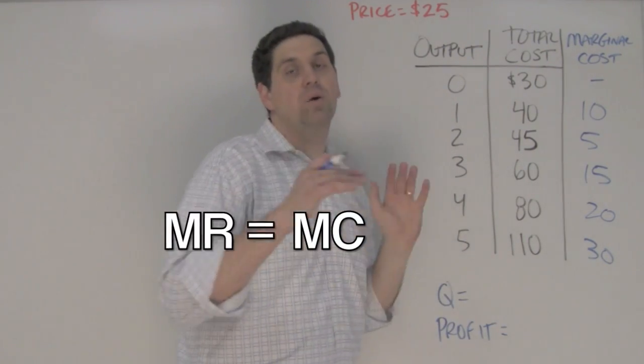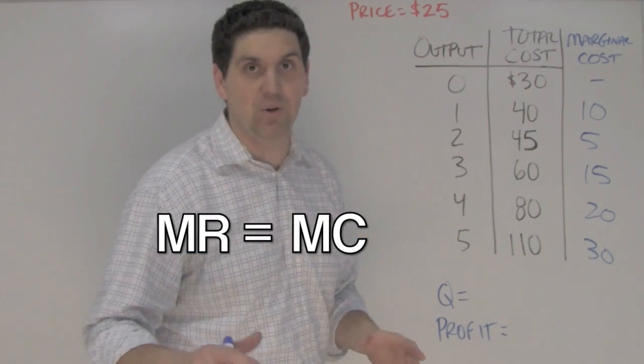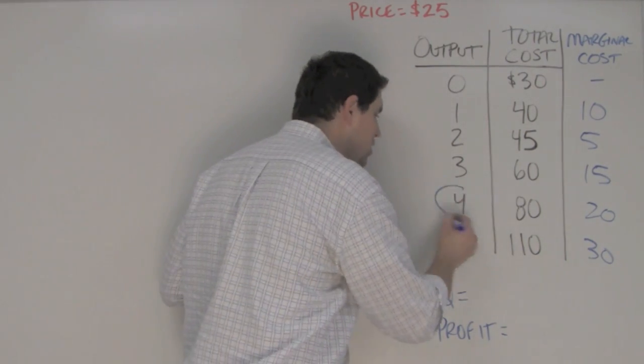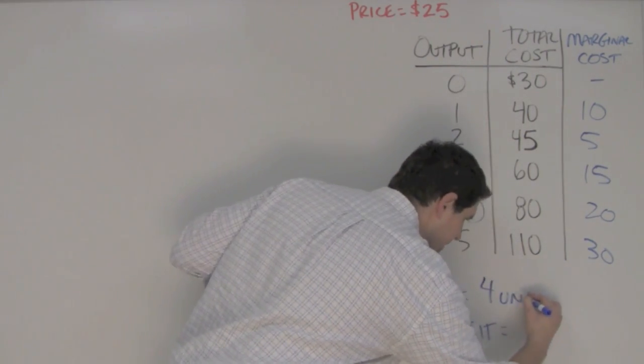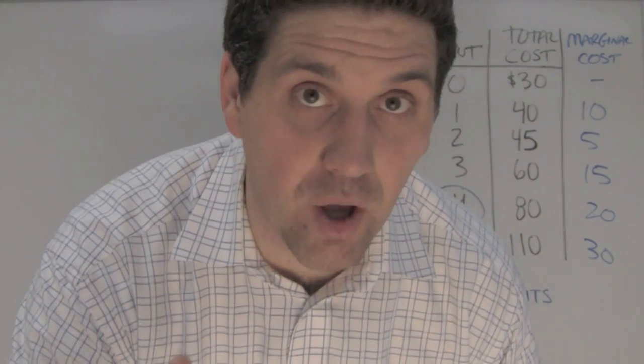The reason why is because of MR equals MC. It's the profit maximizing rule - that's where you produce. In this situation you produce four units. You produce where MR equals MC without the marginal cost going over.